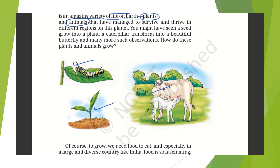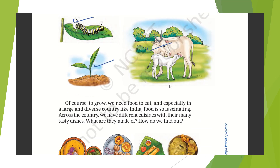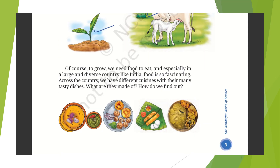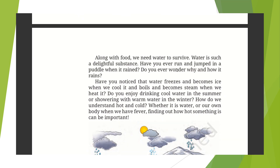You might have seen a seed grow into a plant, a caterpillar transform into a beautiful butterfly, and many more such observations. How do these plants and animals grow? To grow, we need food to eat. Especially in a large and diverse country like India, food is fascinating — across the country we have different cuisines with many tasty dishes. What are they made of? Along with food, we also need water to survive, and we are going to understand about water in this textbook.